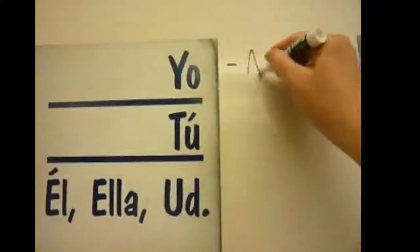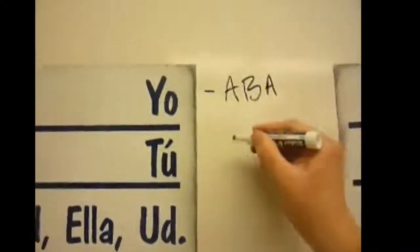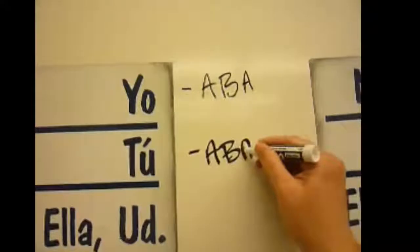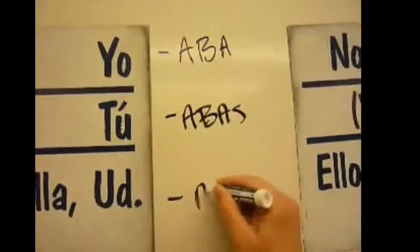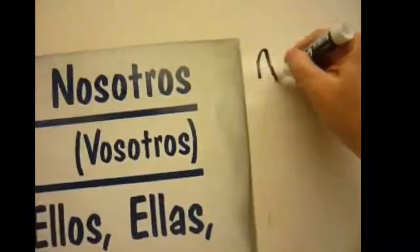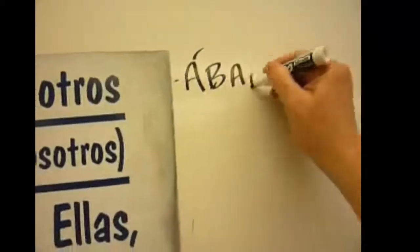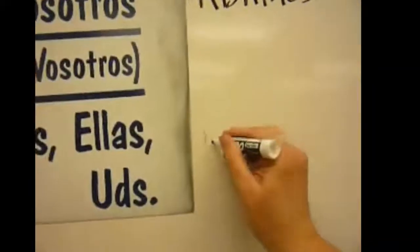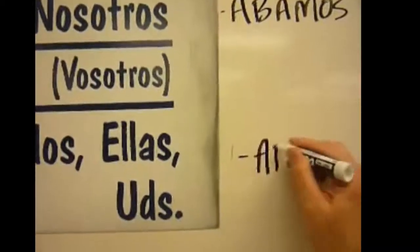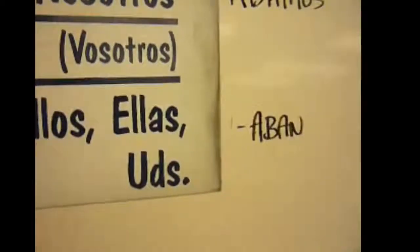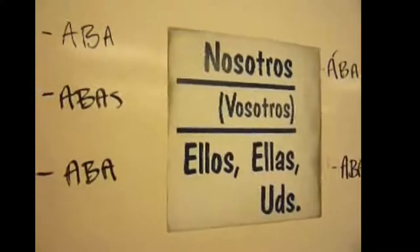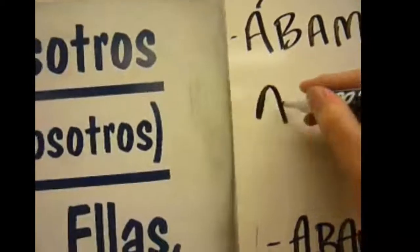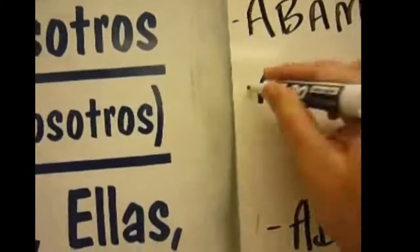Here are the endings for the imperfect. For an AR verb: yo — aba; tú — abas; él/ella/usted — aba; nosotros — ábamos; and ellos/ustedes — aban. If you use vosotros, the ending is abais.